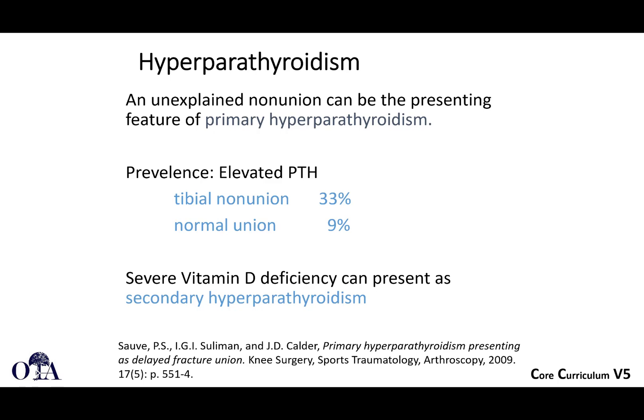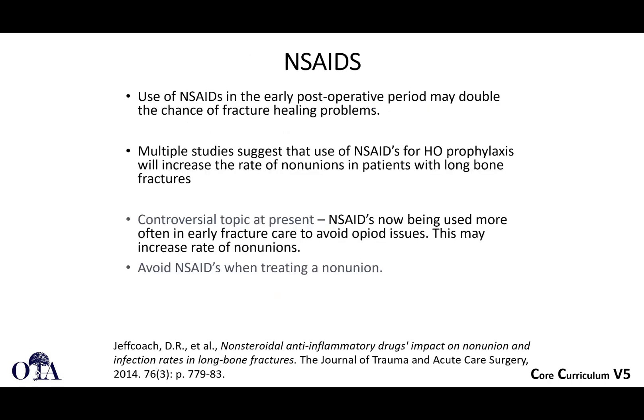Hyperparathyroidism is something that can present itself in an unexplained non-union where you're not convinced there's infection and otherwise think fixation was adequate. In tibial non-union, the prevalence is fairly high. Severe vitamin D deficiency can also present as secondary hyperparathyroidism, so this is something to consider.